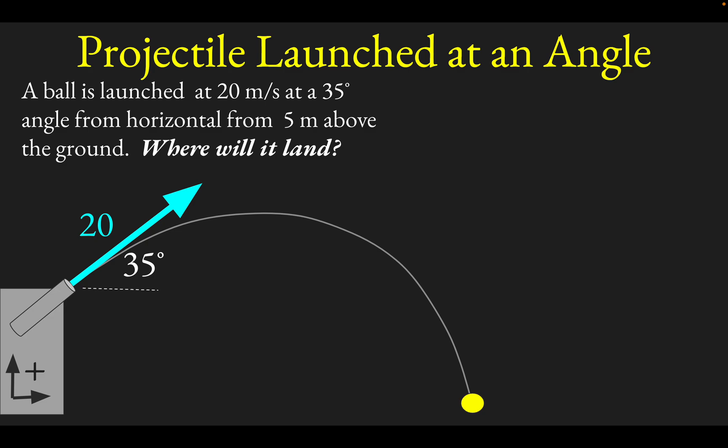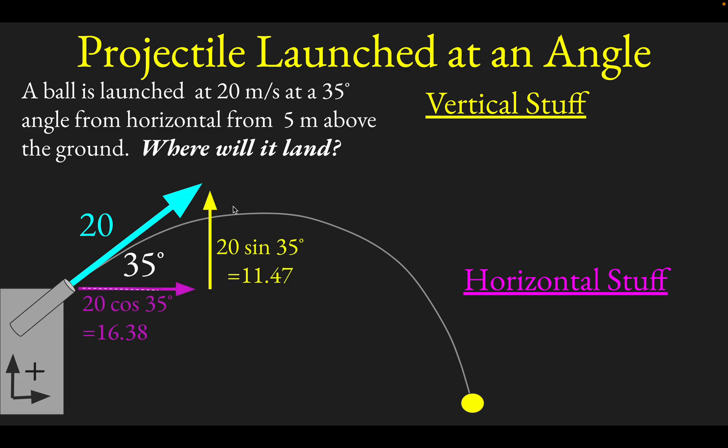Here's really the key: you want to divide things up into vertical stuff and horizontal stuff. Keep track of the vertical motion and keep track of the horizontal motion completely separately. This is the most important point about handling projectile motion. Notice that this initial velocity has both a vertical component and a horizontal component.